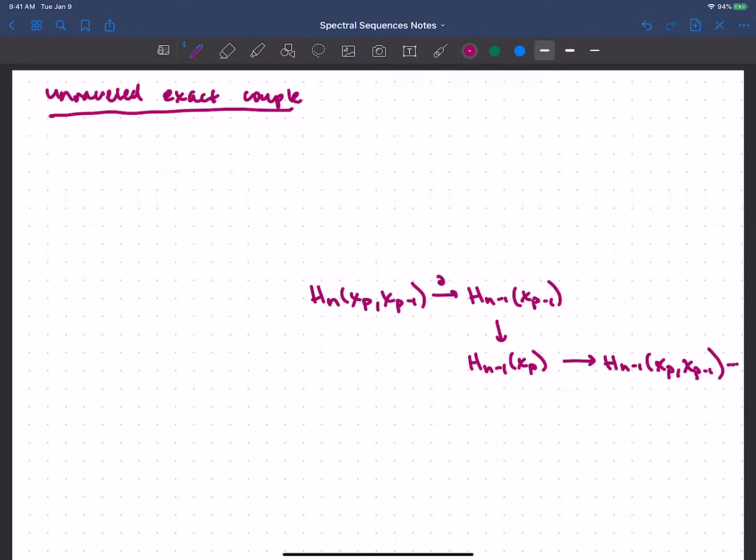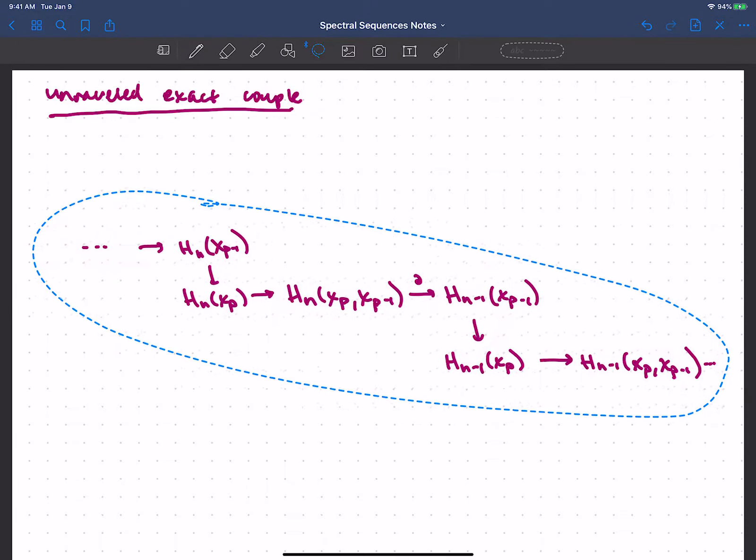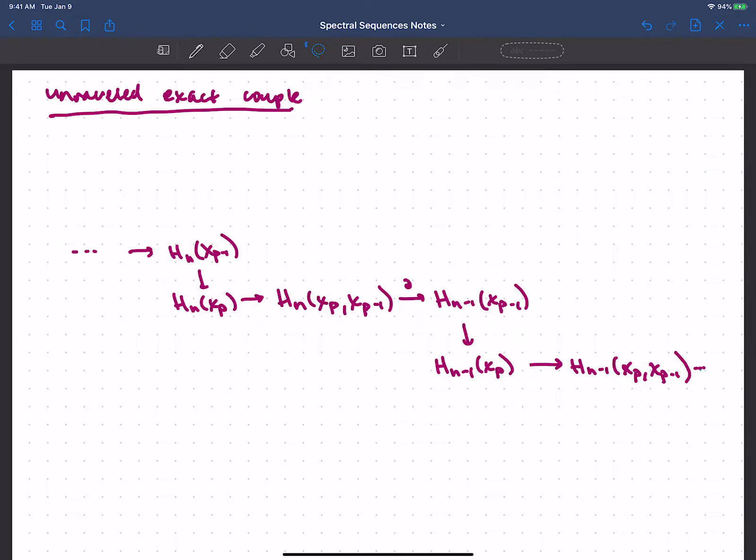Maybe let's just put dot dot dot. Now continuing sort of backwards, I've got HN of XP, and then I should have HN of XP minus 1, but again I'm going to continue this sort of stair step idea, so I'm going to draw that up here. And let's just say that continues. I guess I can move all of this over and have a little bit more space. Okay, so there's that long exact sequence, and I've just written it in a weird stair step.